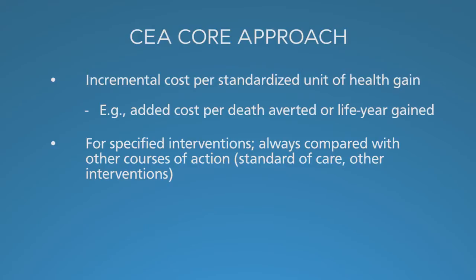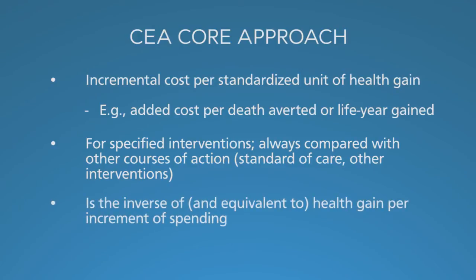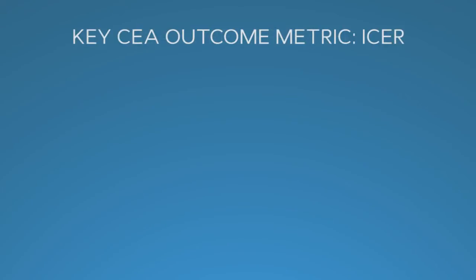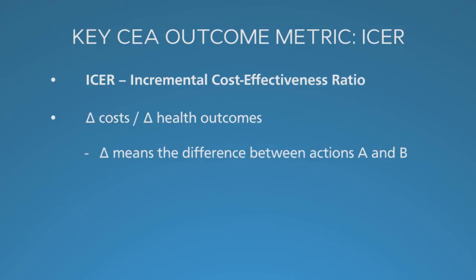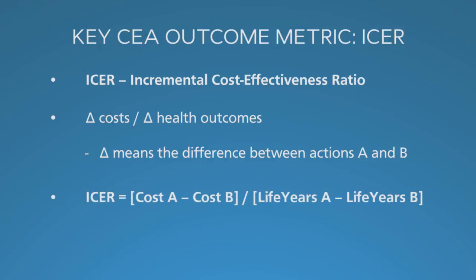No intervention can be properly considered in isolation. It is also important to note that the cost-effectiveness ratio — the cost per standardized unit of health gain — is the inverse of health gain per increment of spending. If you get more added health per increment of spending, then you are spending less per added unit of health. The key outcome metric for cost-effectiveness analysis is the incremental cost-effectiveness ratio. This is the difference in cost, represented as delta cost, divided by the difference in health outcomes — the differences between two possible actions, A and B. Thus, the incremental cost-effectiveness ratio is the cost of option A minus the cost of option B, all divided by the difference in life years. Everything is comparative.